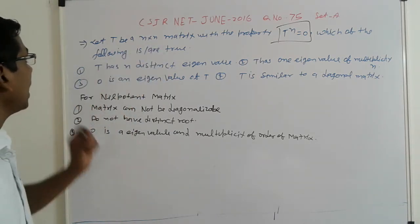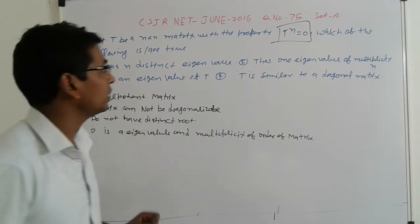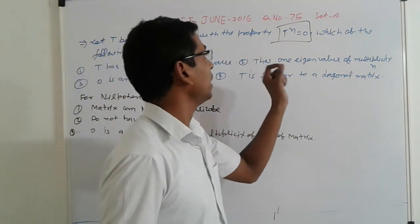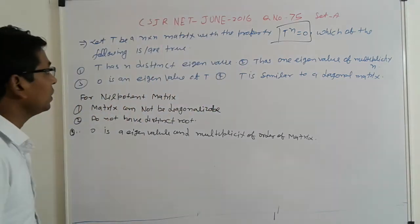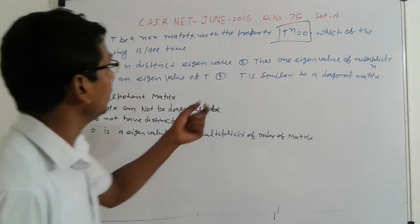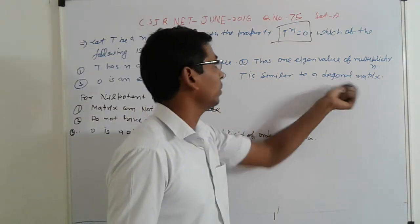First, T has n distinct eigenvalues. Second, T has one eigenvalue of multiplicity n. Third, 0 is eigenvalue of T. And fourth, T is similar to diagonal matrix.